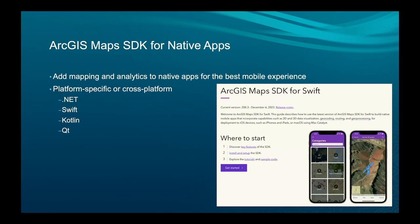On the native apps side, we have a number of different SDKs. The big ones are .NET, Swift, Kotlin, and Qt. .NET and Qt can be used to build apps cross-platform, whereas Swift is for iOS devices and Kotlin is for Android.